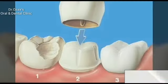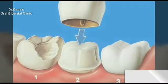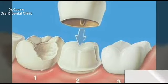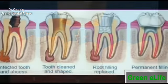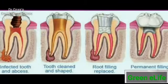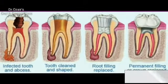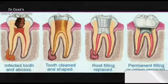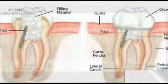When performing routine root canals, a dental surgeon will drill through the tooth and then remove infected and decayed enamel, dentin, and pulp. For this reason, teeth with large cavities are weak even when the cavities are filled.